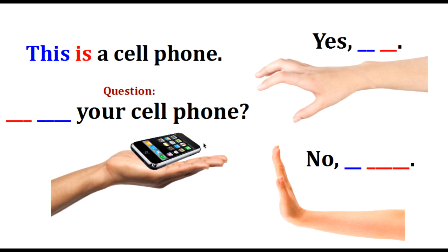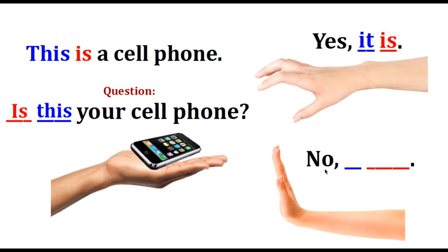This is a cell phone. The question: Is this your cell phone? The positive answer: Yes, it is. The negative answer: No, it isn't. Repeat: Is this your cell phone? Yes, it is. No, it isn't. Very good.